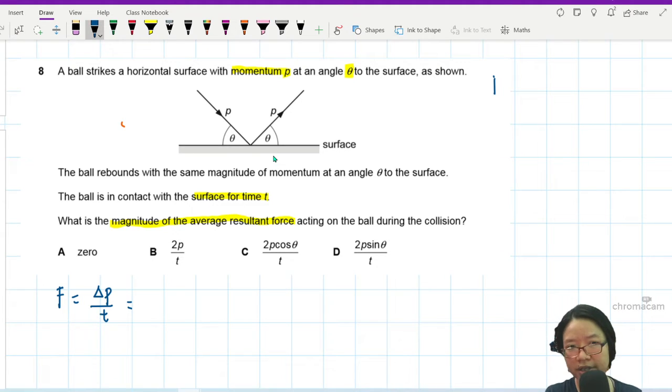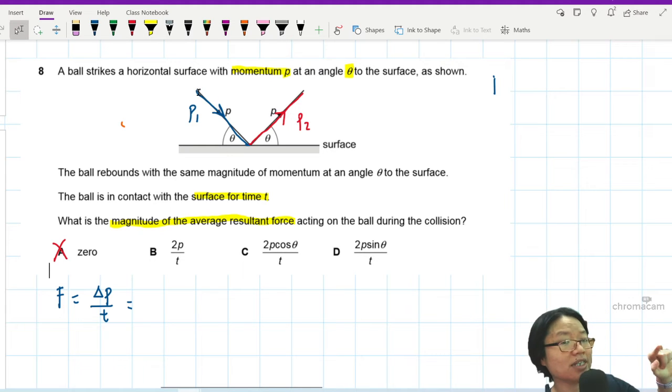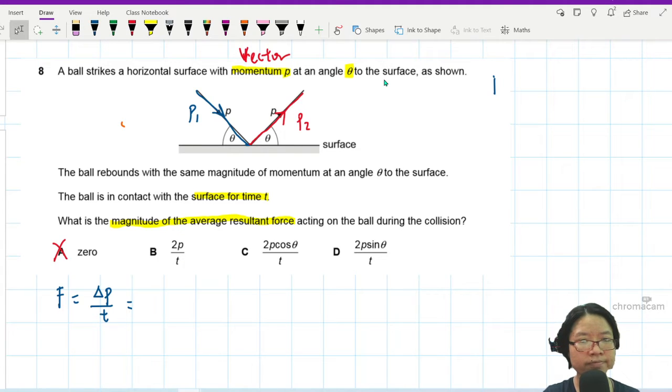So I will coin this p1. Let's say this is the initial momentum going down in this direction. And the final momentum p2 will be this rebound in this direction. Magnitude is the same but direction not the same. So the answer cannot be zero. The object will not change its direction of motion unless acted on by a resultant force. This is not p minus p because p is a vector.